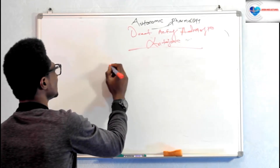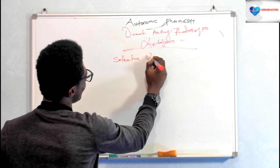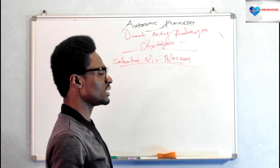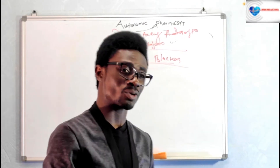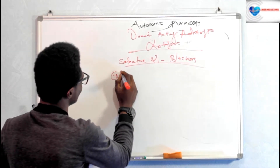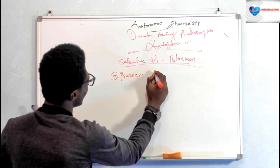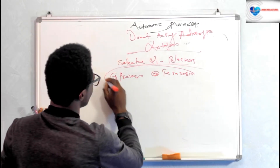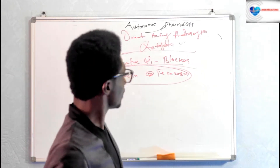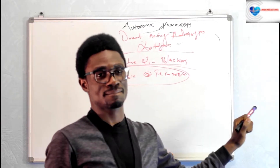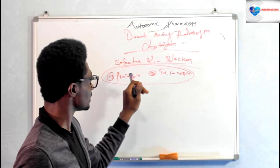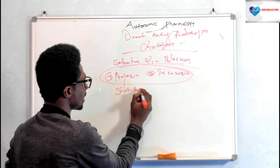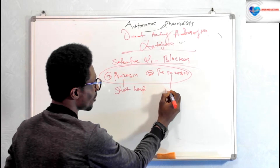We have the selective alpha-1 blockers. At least you should know two drugs — there are many, but at minimum know prazosin and terazosin. The main difference between them is that prazosin has a very short half-life, while terazosin has a very long half-life.